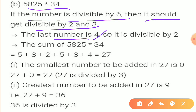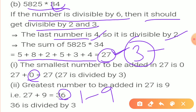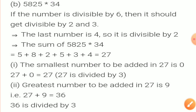Part B: the last digit is 4 so it is divisible by 2. Adding all the digits we get 27, which is already fully divisible by 3. So the smallest digit will be 0. For the greatest: 27+9 = 36, which is divisible by 3. So the greatest digit is 9. I hope this is clear — it is a very easy question.